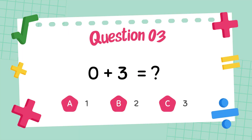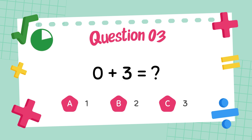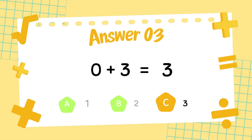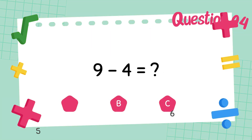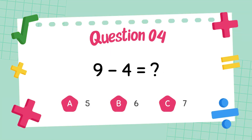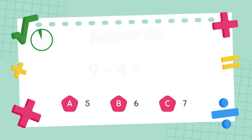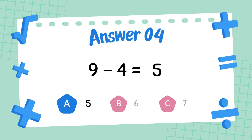What is 0 plus 3? The answer is 3. What is 9 minus 4? The answer is 5.